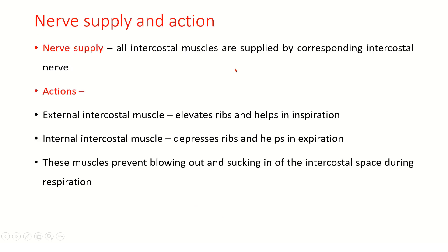All intercostal muscles are supplied by the corresponding intercostal nerves. The external intercostal muscle elevates the ribs and helps in inspiration. The internal intercostal muscle depresses the ribs and helps in expiration. These muscles also prevent blowing out and sucking in of the intercostal space during respiration.